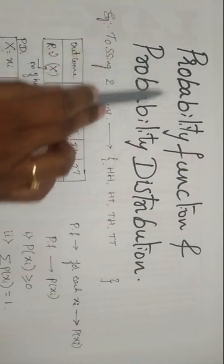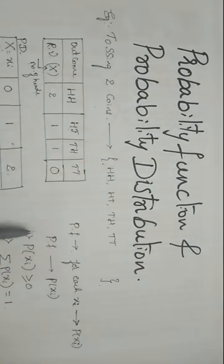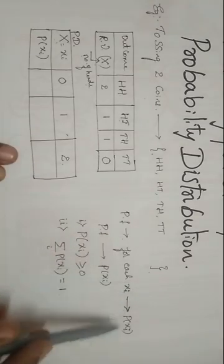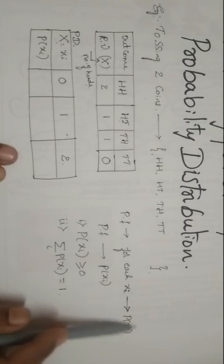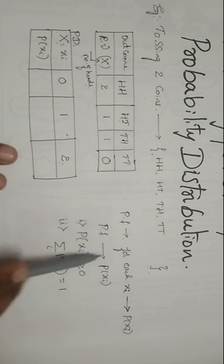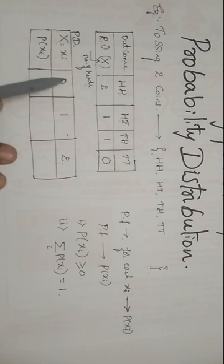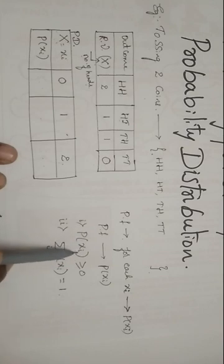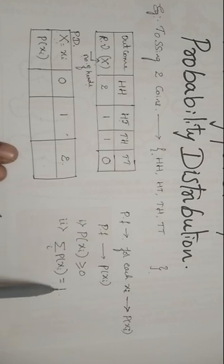Now let us explain about the probability function. The probability function — for each value of Xi, which here are 0, 1, and 2, we need to find P(Xi). These P(Xi) values are called the probability function. The characteristics of this probability function are: P(Xi) will always be greater than or equal to 0, and the sum of all P(Xi) will be equal to 1.